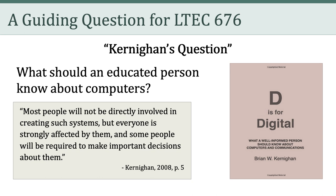He writes on page 5: 'Most people will not be directly involved in creating computer systems, but everyone is strongly affected by them, and some people will be required to make important decisions about them.' Looking at this quote more carefully, there are three important points worth noting. First, only a few people are involved in creating technology systems. Second, nearly everyone in society is affected both directly and indirectly by these technological systems. And third, some people are required to make important decisions about these technological tools and how they're used.